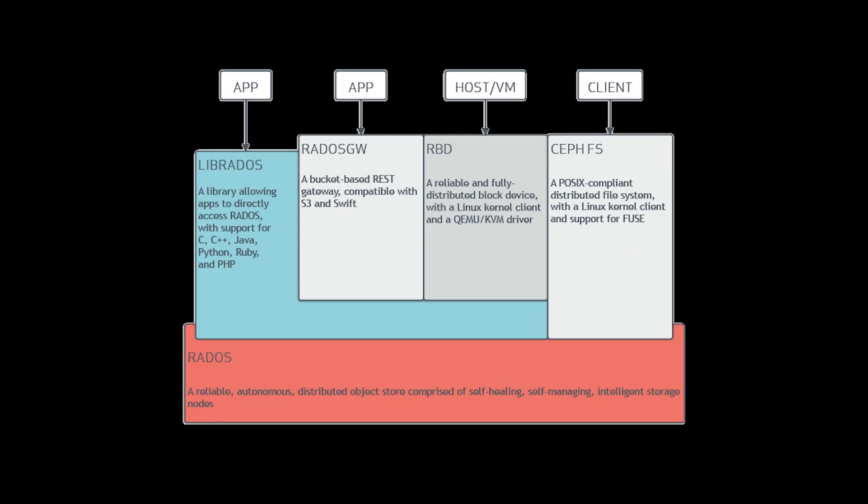Ceph has an API layer called librados that supports many languages such as C, C++, Java, and Python, and it is the foundation of what Ceph's different storage interfaces are built upon. A great feature of Ceph that makes it extremely robust and reliable is that it allows administrators to provide object-based storage through things like S3, as well as block devices through what's called RBD or RADOS Block Devices, and finally through File System. Ceph uses a distributed file system called CephFS.